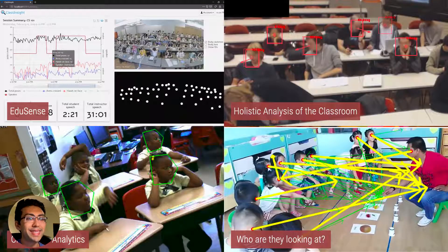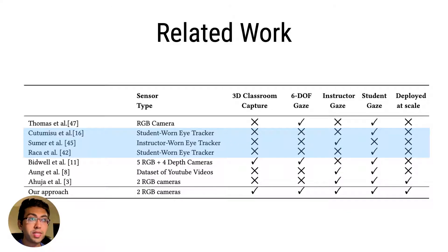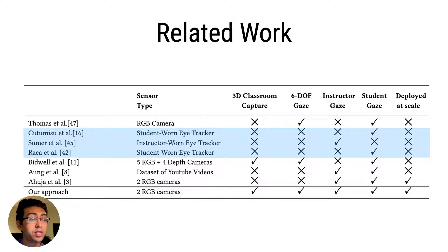Classroom sensing is an important and active area of research with great potential to improve instruction. Prior systems have actively looked at monitoring the gaze of students and instructors. For these purposes, they have explored two main approaches. The first is instrumenting the wearer with an eye-tracking headset, which although accurate, is very invasive and expensive, thus making it not scalable.